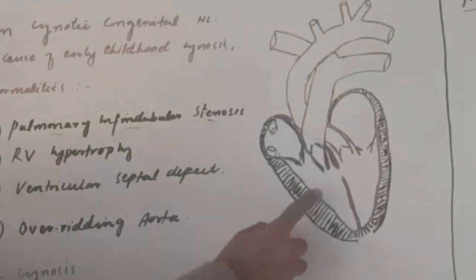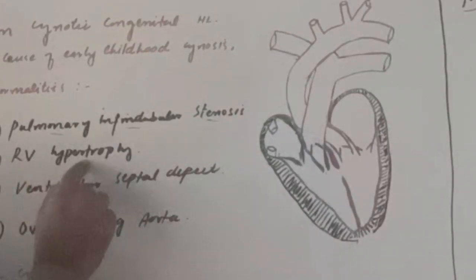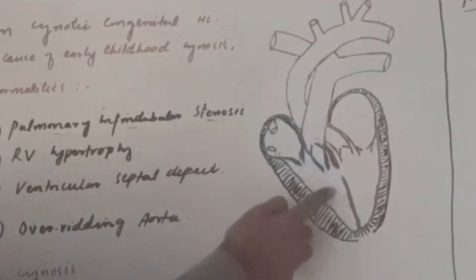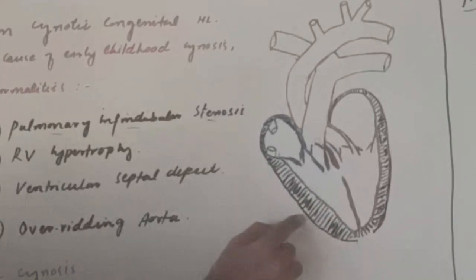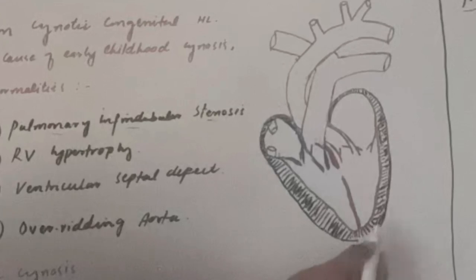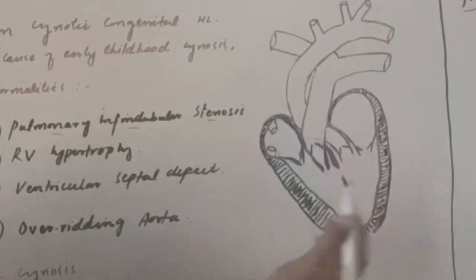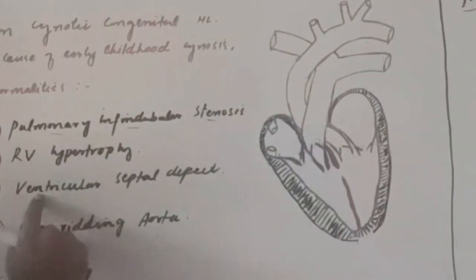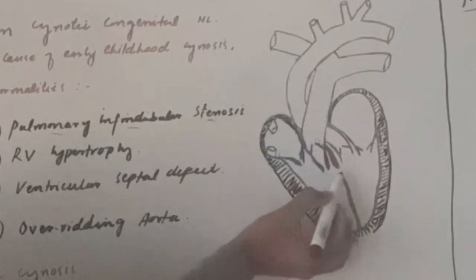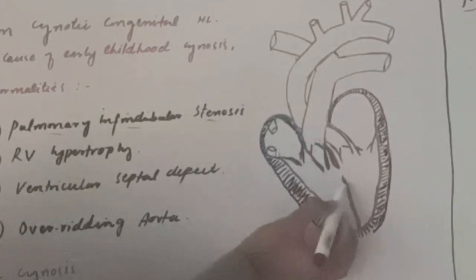Because of this stenosis, right ventricular pressure increases. When right ventricular pressure increases, there will be right ventricular hypertrophy — this is the second abnormality. Here I have drawn the right ventricle becoming hypertrophic. The third abnormality is the ventricular septal defect. Here you can see the ventricular septum, and there is a defect — a small hole in the ventricular septum.